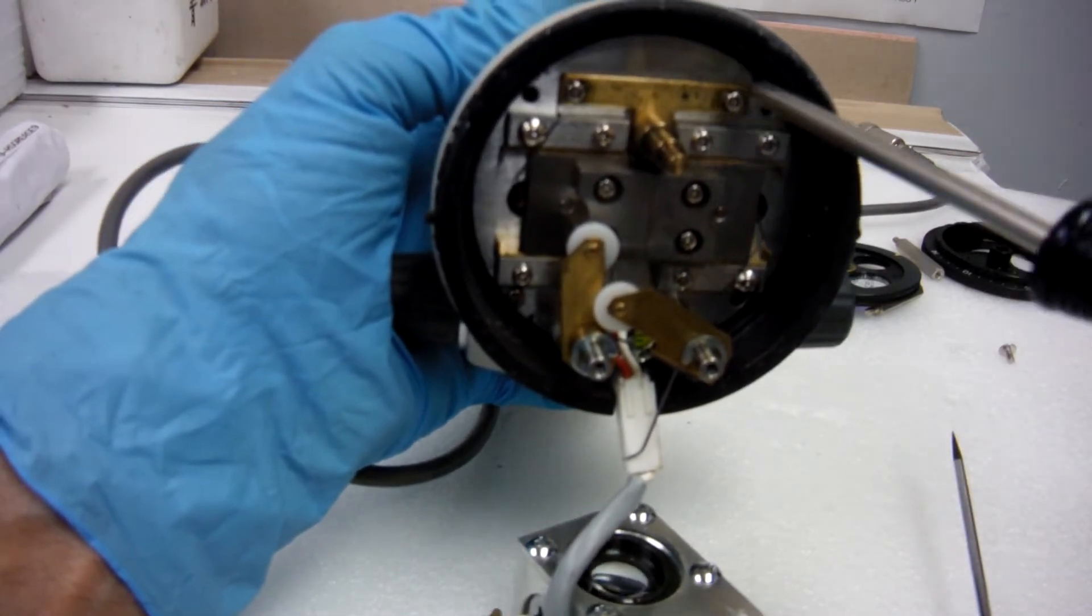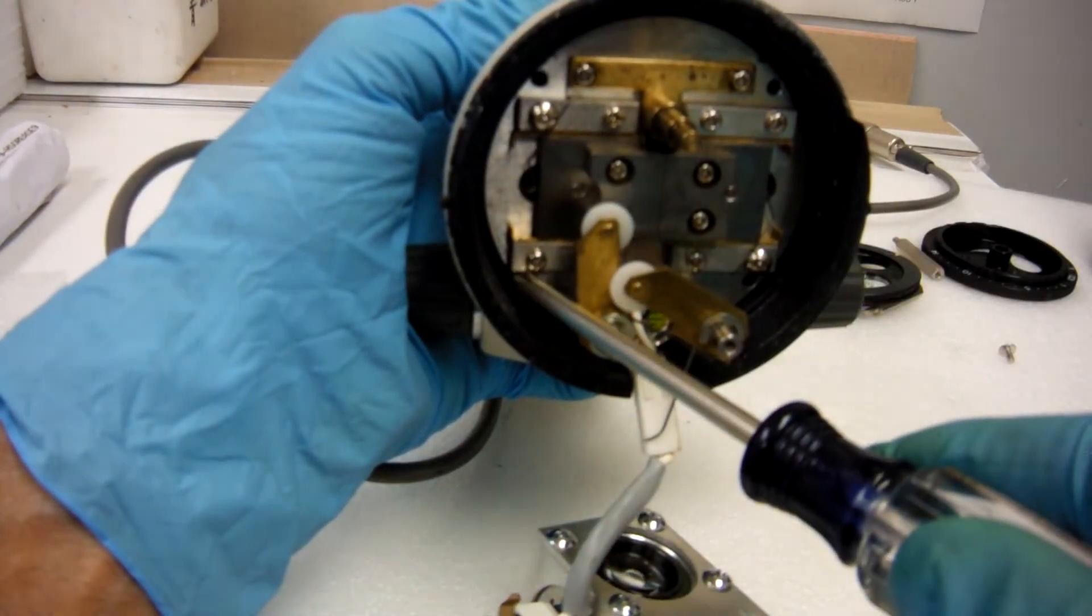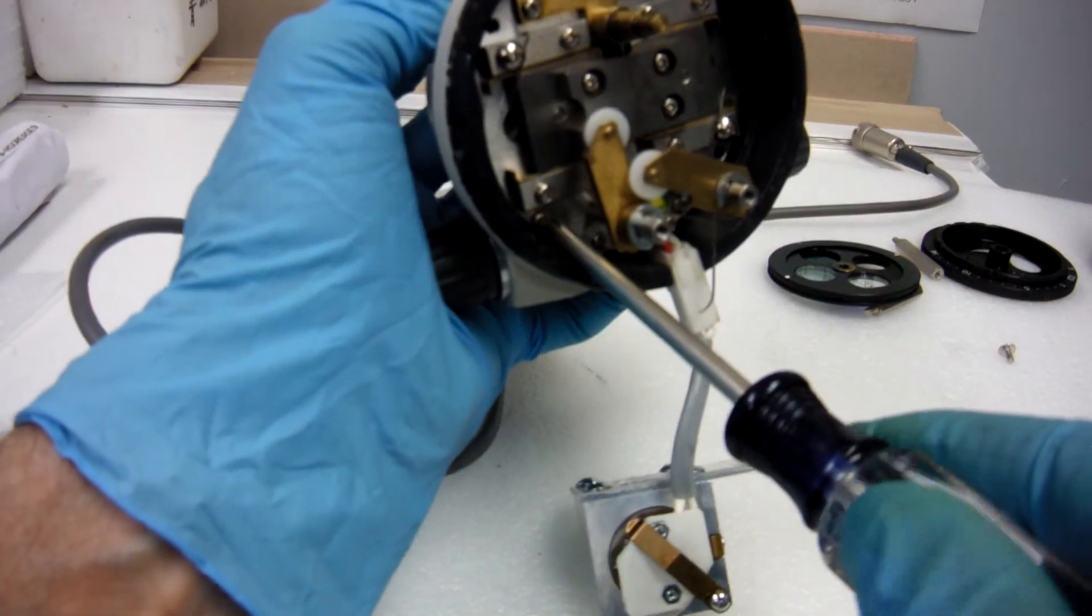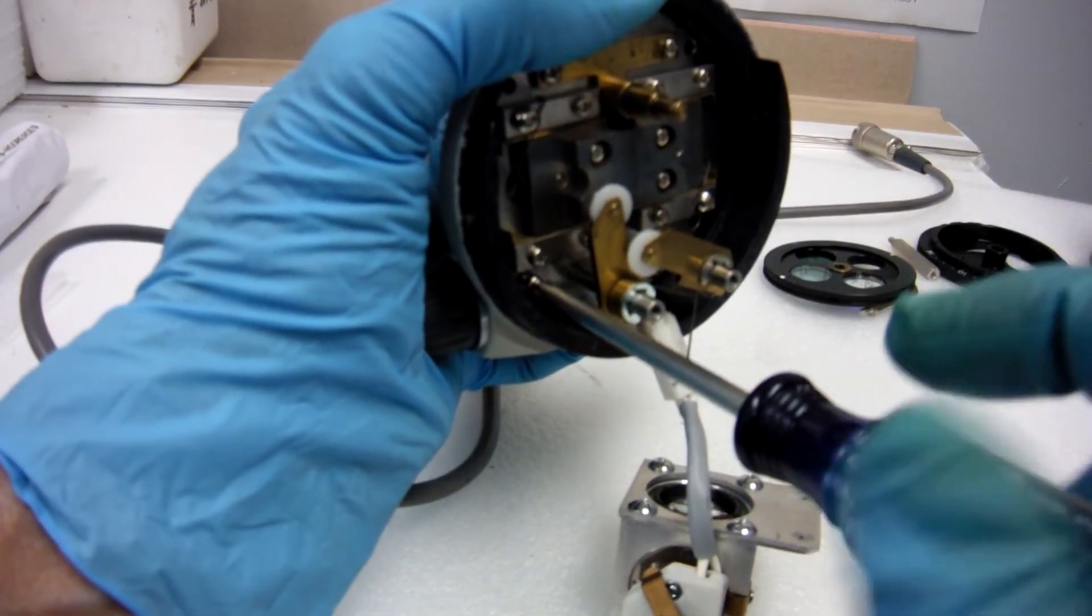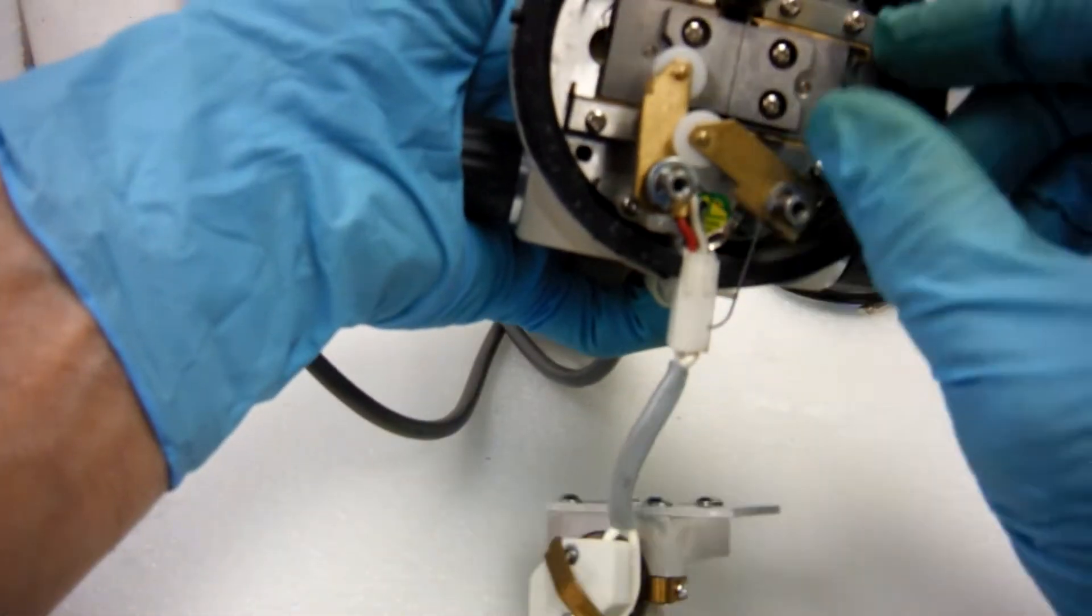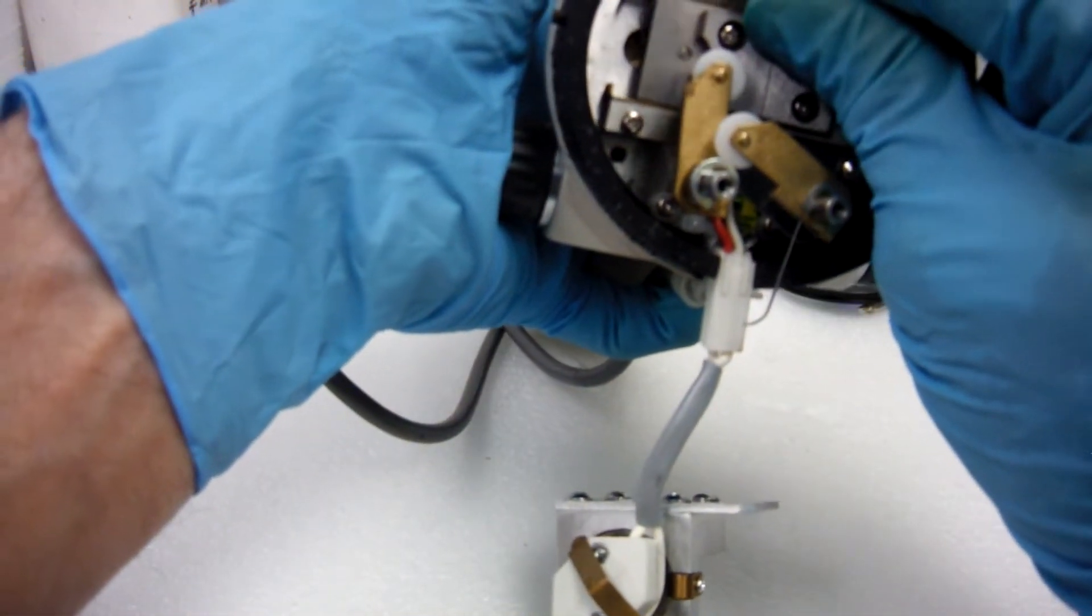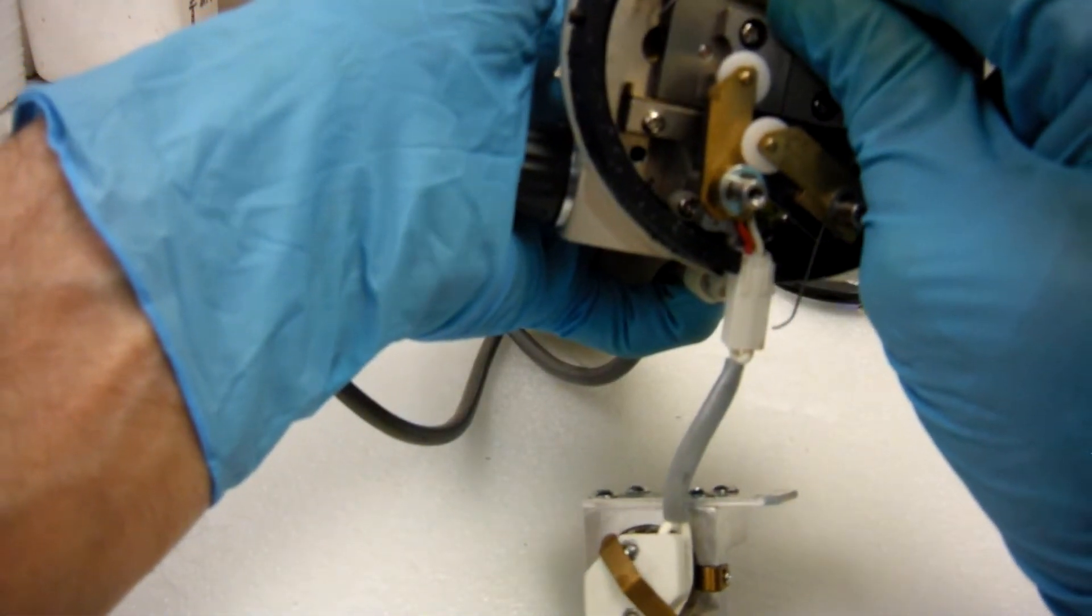Next, take out four screws. I've already taken three of them out. This is the fourth one. Put those four screws out. This assembly should come on out.